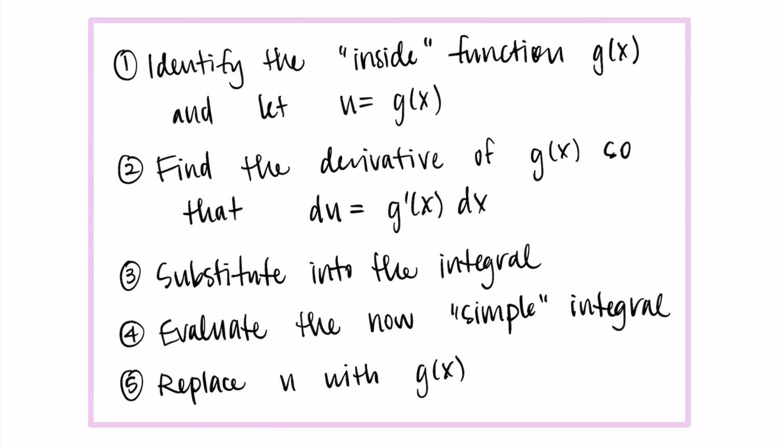Then we find the derivative of g, whatever we picked for our u, so that we have what our du is equal to. Then we substitute u and du into the integral so that we don't have any more of the original variable left, we just have things in terms of u.